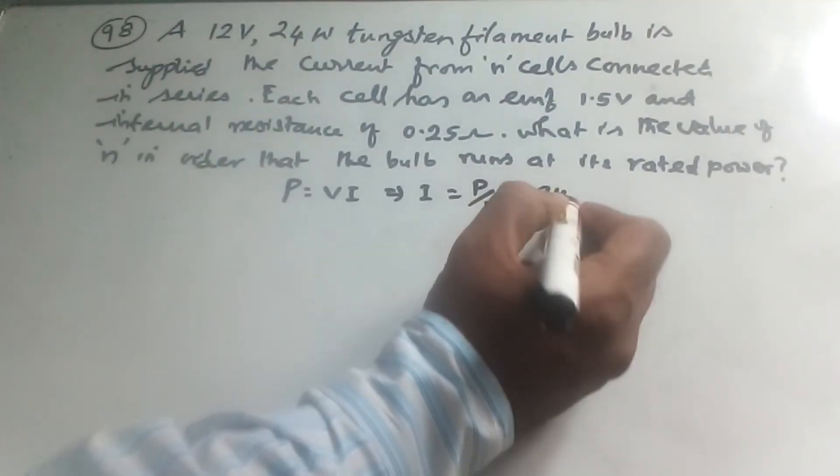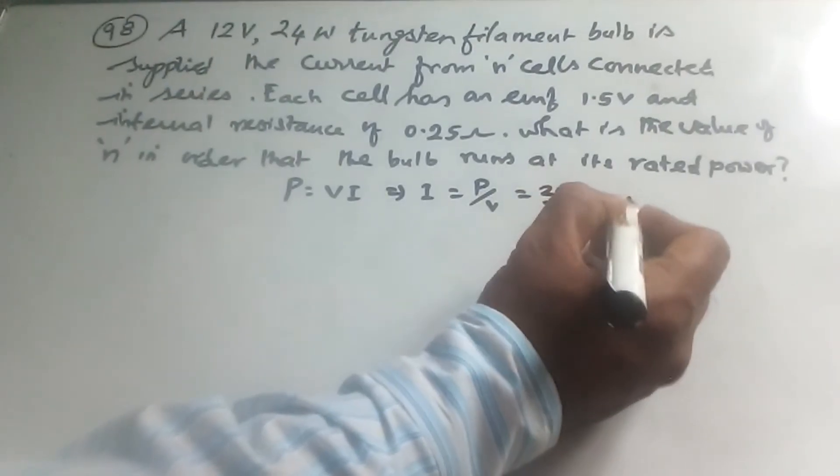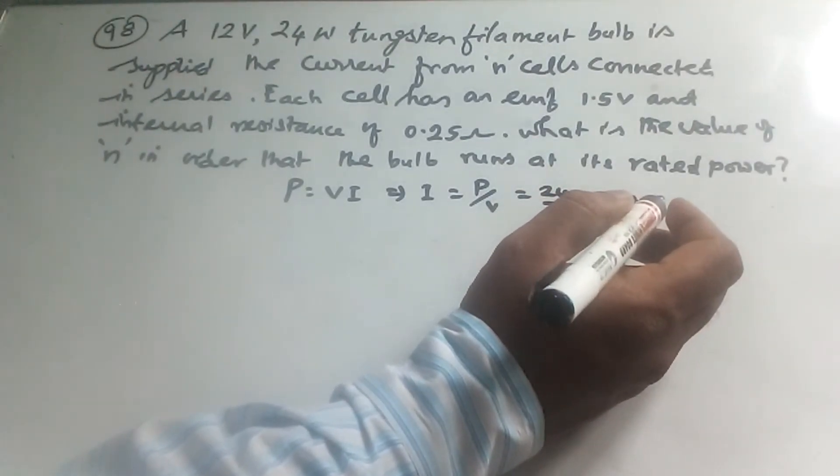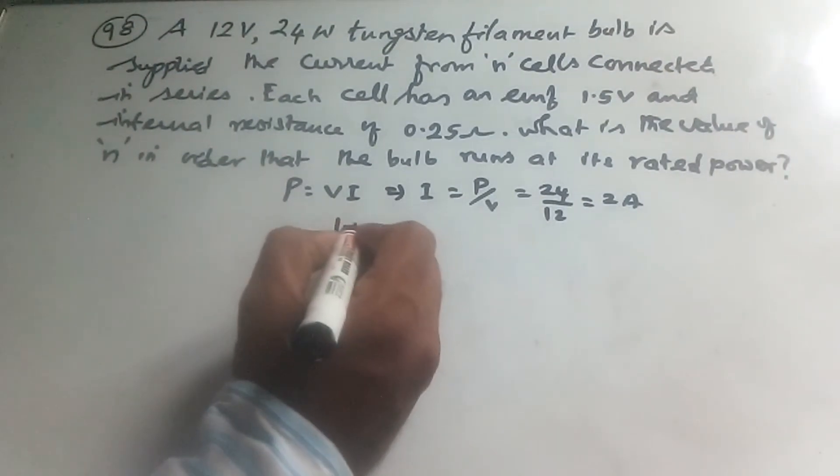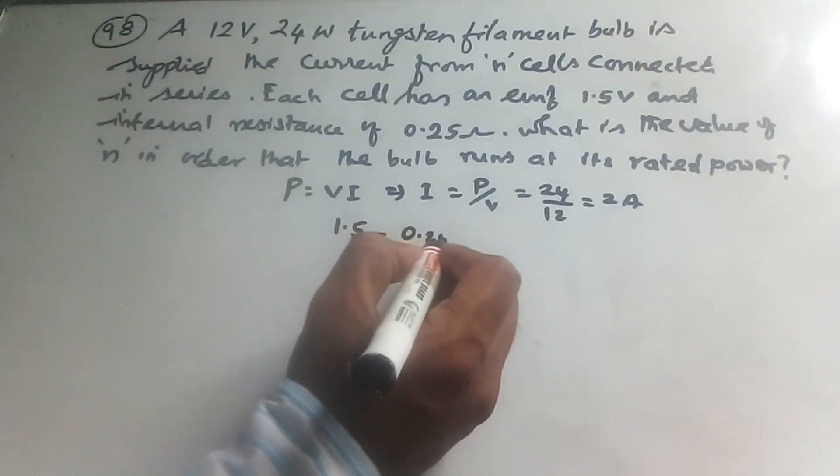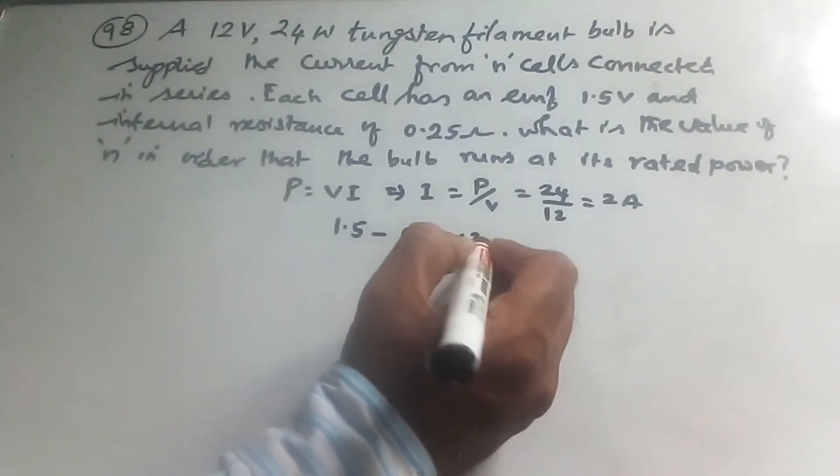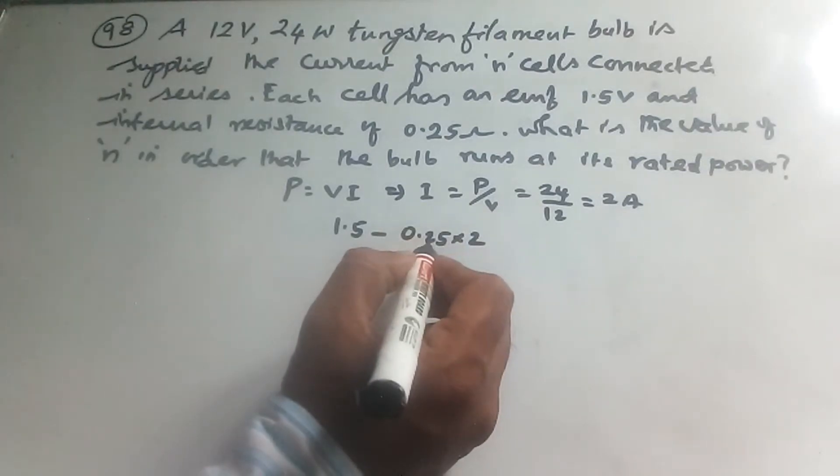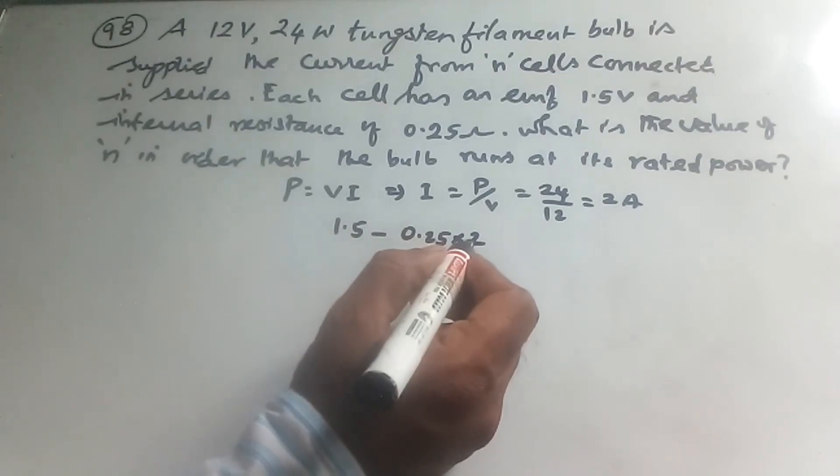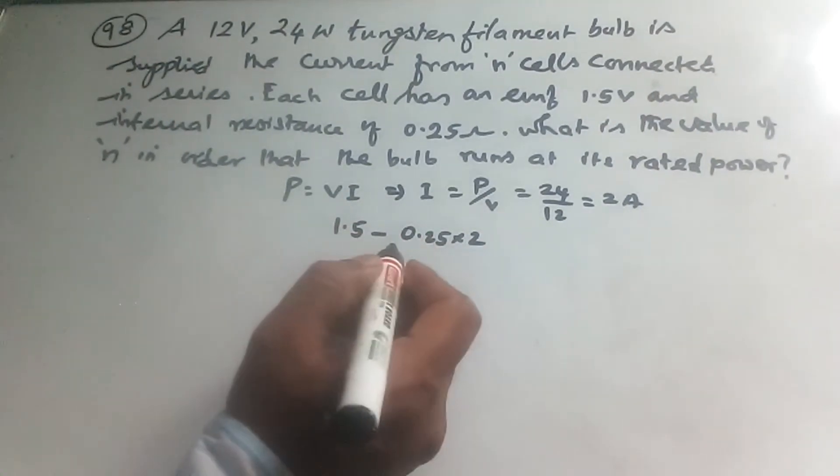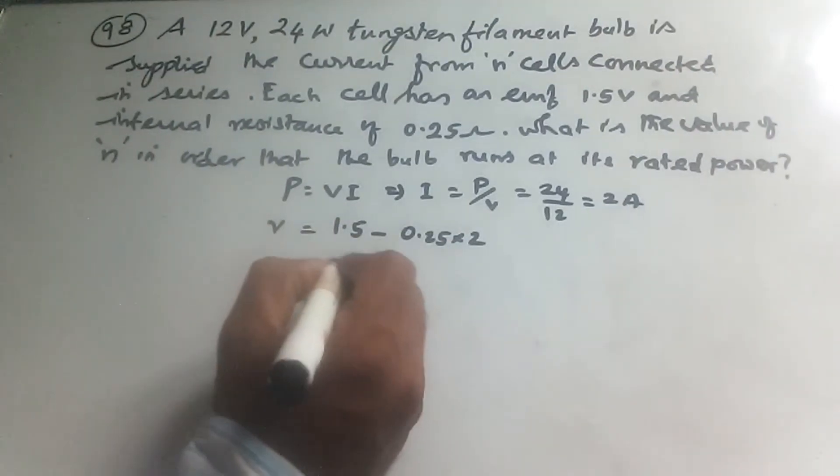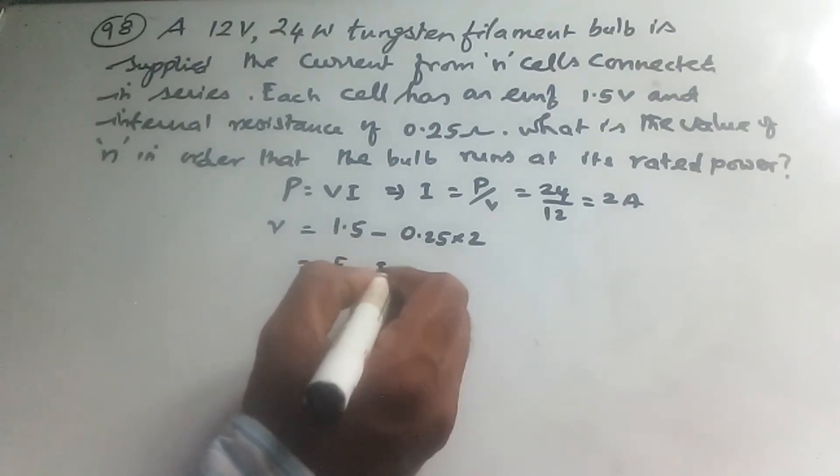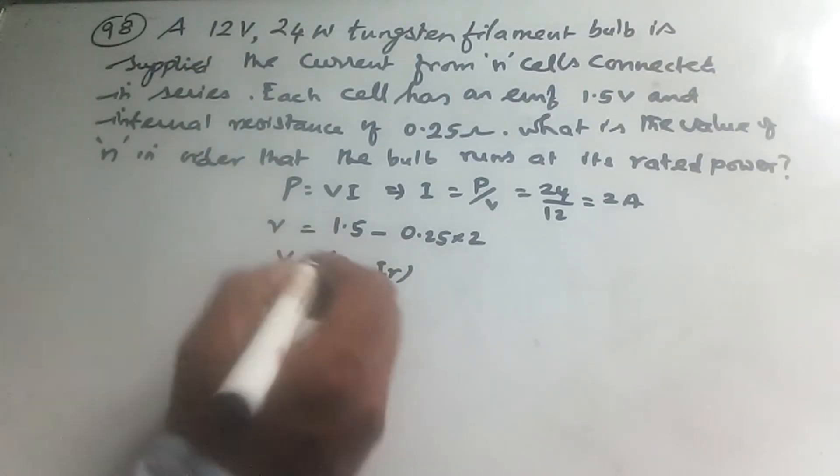Therefore, the terminal voltage of each cell is 1.5 minus 0.25 into 2, where 0.25 is the internal resistance of this cell and 2 is the current. So this is the value V = E - IR. This is the formula: E is 1.5V, each cell EMF, I is 2A, R is the internal resistance.